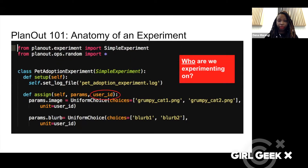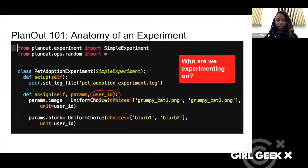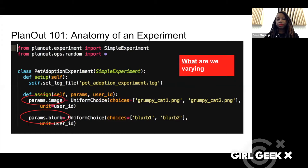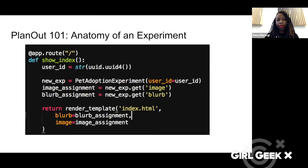What you have to do on your end is tell PlanOut the required rules of engagement: tell it what you're trying to do, who you're experimenting on — in this case a user ID — tell it what you're varying (in this case, an image and a blurb), and tell it how you want to vary this — we're using uniform choice, a 50/50 split. That's all it really needs to know. As for where this goes in your code, wherever you'd be using this image and blurb — for example in a Flask route — you just throw in your assignments and pull directly from them into your template.